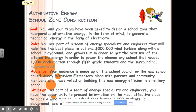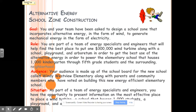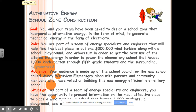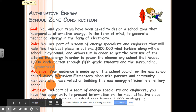You will also place a playground and arboretum in order to get the best use of the alternative energy to power the elementary school that houses 1,000 kindergarten through fifth grade students and the surrounding neighborhood. Your audience is made up of the school board for the new school called Windy Westview Elementary, along with parents and community members who have voted on building this new energy efficient elementary school.